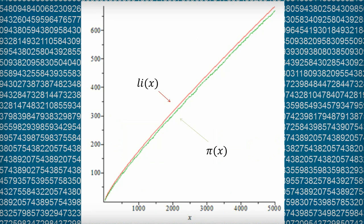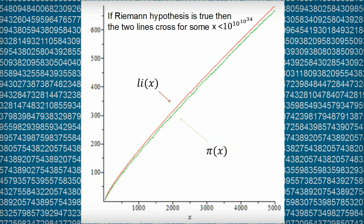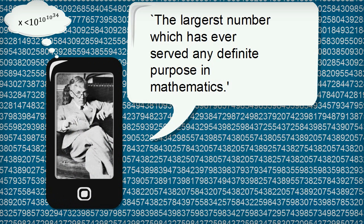Then in 1933, a South African mathematician, Stanley Skewes, published a paper in which he gave a conditional proof. He proved that if the Riemann hypothesis is true, then the lines crossed for some x is less than 10^10^10^34. So if I could draw a big enough graph with the x-axis going to 10^10^10^34, and if the Riemann hypothesis is true, then the two lines must have crossed.